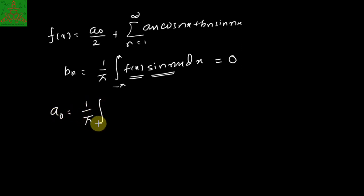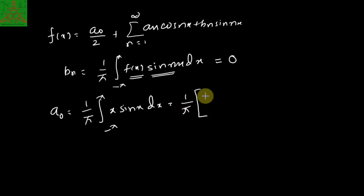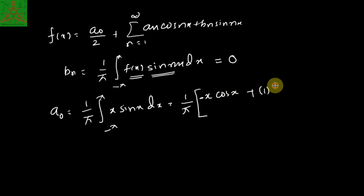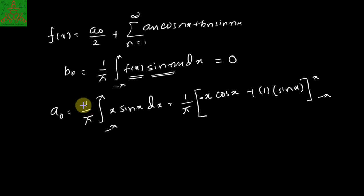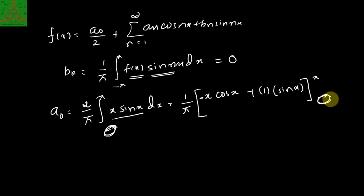Now let us calculate the value of a₀. According to the definition, it is 1/5 times the integral from −5 to 5 of x·sin(x) dx, which is your f(x). We are going to apply integration by parts. Since this function is an even function, the integral from −5 to 5 equals 2 times the integral from 0 to 5, to reduce the calculation.